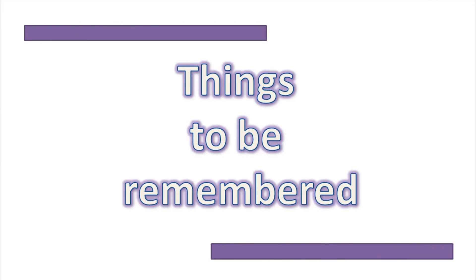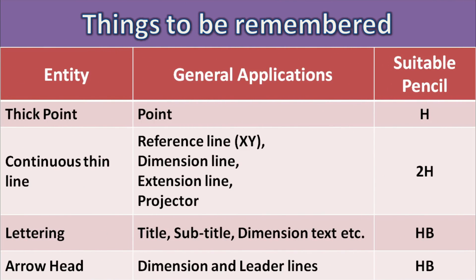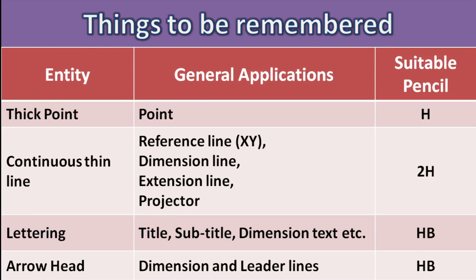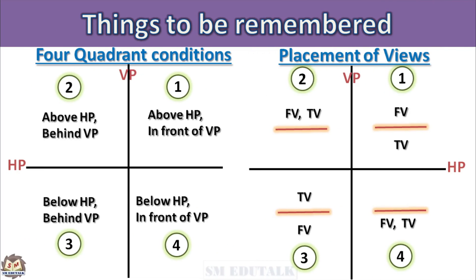Some things you should never forget in Projection of Points — let us see them in the next 3 slides. In the first slide, I have given the different types of lines used in drawing and the suitable pencils to draw them. We have seen this elaborately in the Line Types video already. In the second slide, I have given 4 quadrant conditions and placement of views, which are essential for imagining a point in 3D environment and projecting onto 2D planes to get a 2D drawing on the drawing sheet.